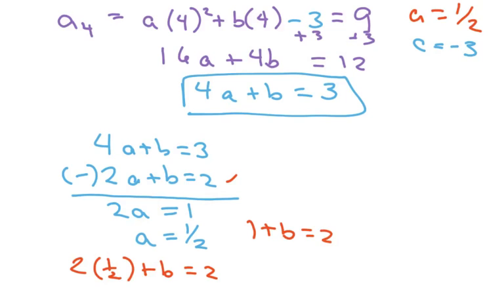And c is negative 3. And b equals 1. And remember our model. And you just plug in your a's, b's, and c's. So we get a was 1 half. b was 1, so I'm just not going to even write that one. And c is negative 3.